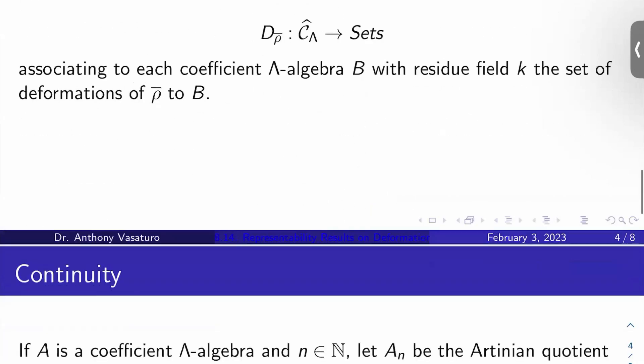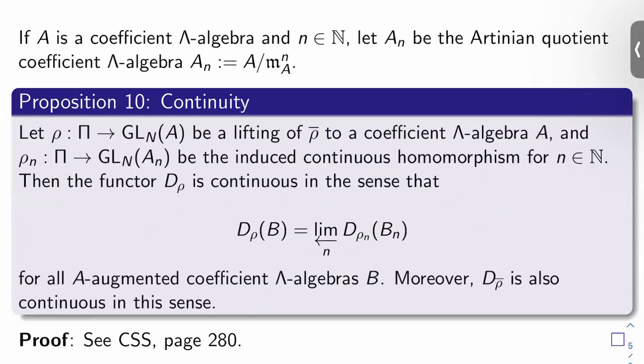So here are two of the main results, I would say, of the chapter. If A is a coefficient lambda algebra and N is a natural number, let A sub N be the Artinian quotient lambda algebra, which is given by A mod the nth power of the maximal ideal of A.